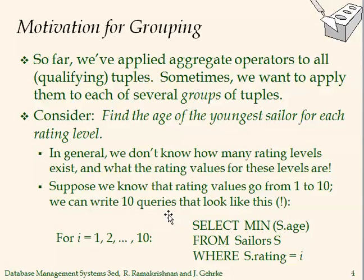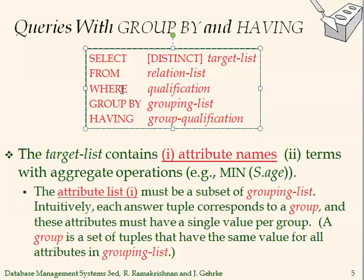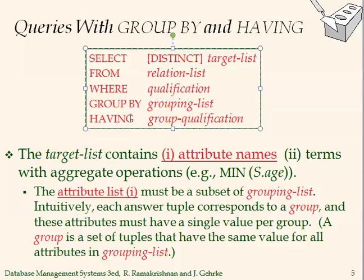Another very useful feature — not in relational algebra — is grouping. We want to group rows in a table by some attribute. The query format is: SELECT ... FROM ... then optionally WHERE, then GROUP BY, then HAVING. The WHERE is executed first, after the Cartesian product, then GROUP BY groups the resulting tuples, and then HAVING can eliminate groups.